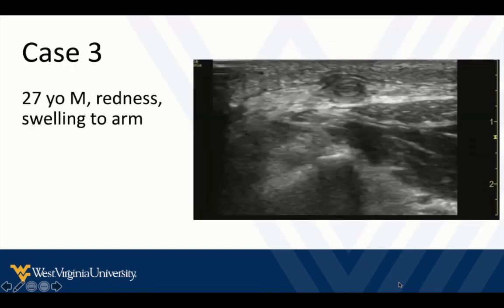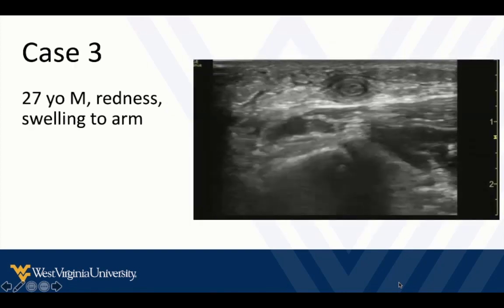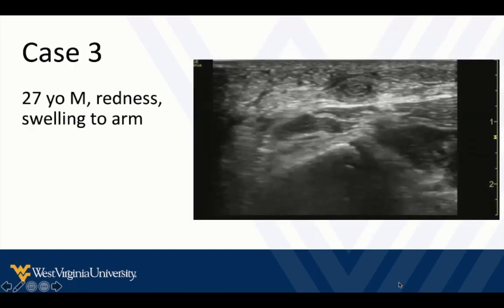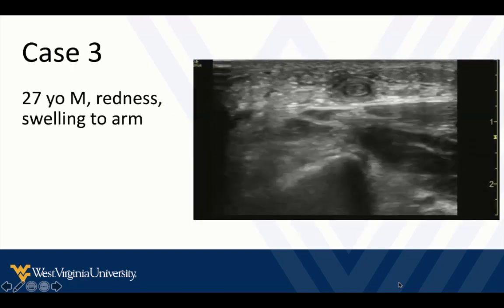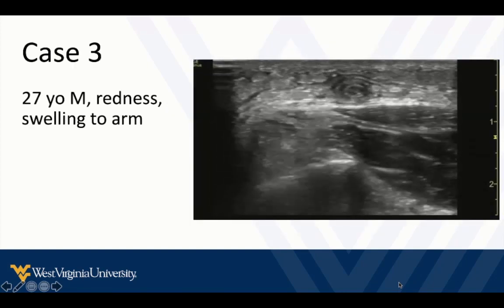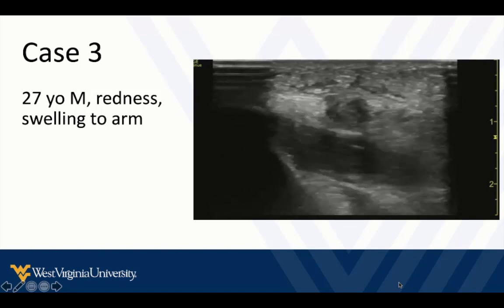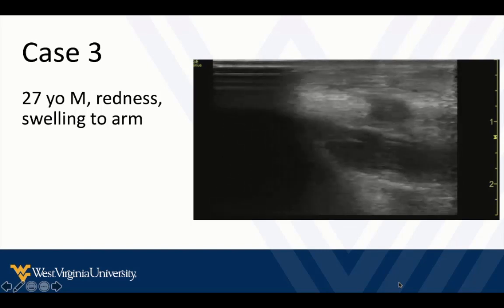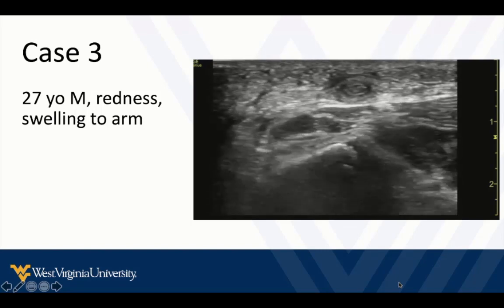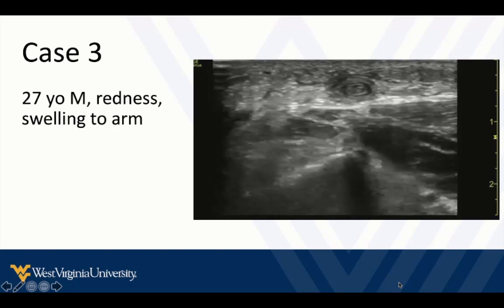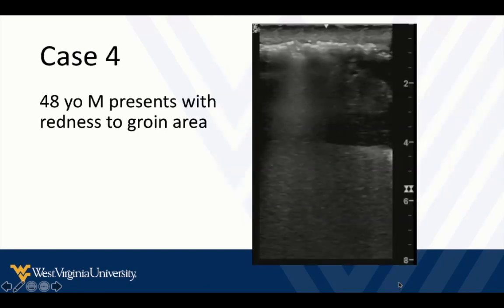Next case: a 27-year-old male who presents with redness and swelling to their arm. You ask yourself, is this cellulitis? Is this a DVT? Is it something else? So you take a look with ultrasound and get some information that may help you out.